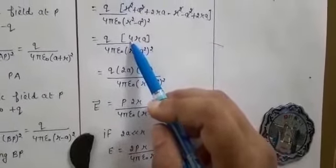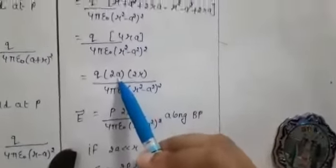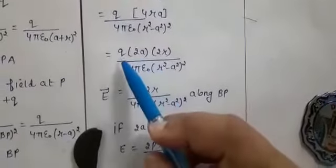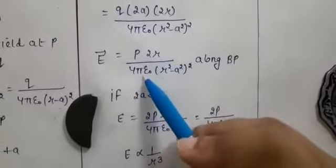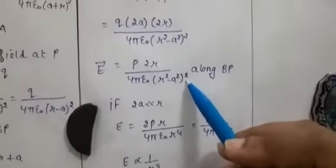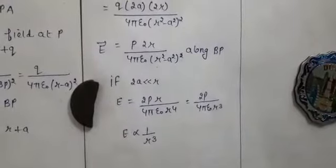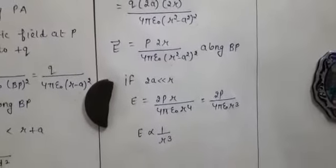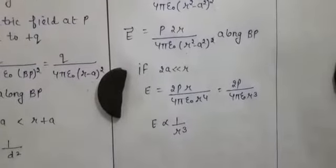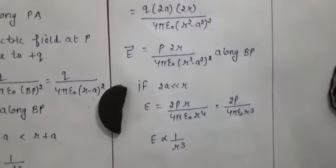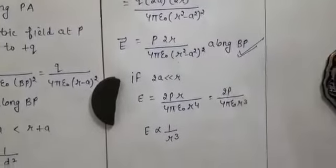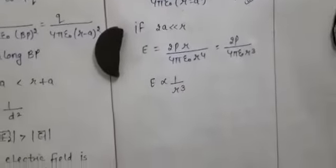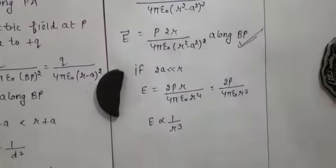Now rearranging: split 4ra as (2a) × (2r). We do this because the dipole moment has the formula p = q × 2a, so we replace q × 2a with p. The formula becomes 2pr divided by 4πε₀(r² − a²)². The direction of the net electric field is along the direction of E2, which is from B to P. This is the final result for the electric field at an axial point of an electric dipole.